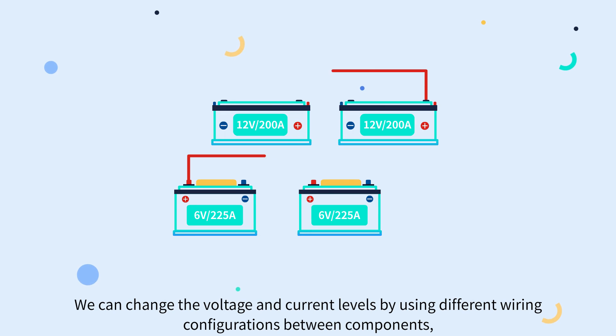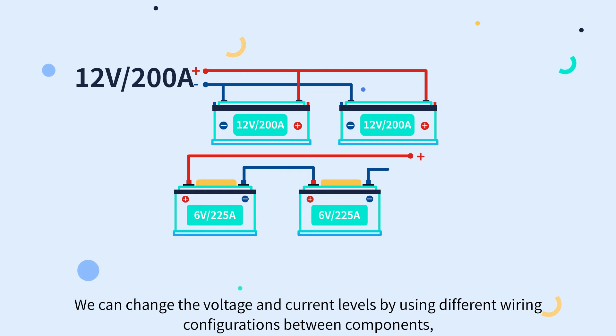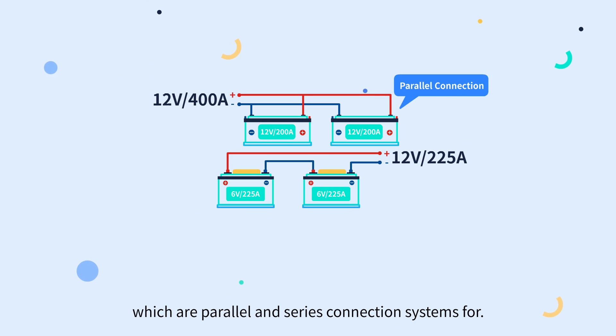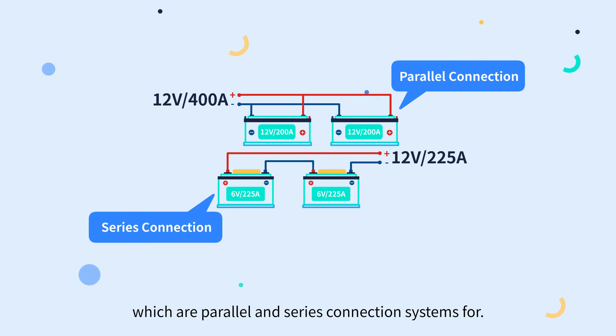We can change the voltage and current levels by using different wiring configurations between components, which are parallel and series connection systems.